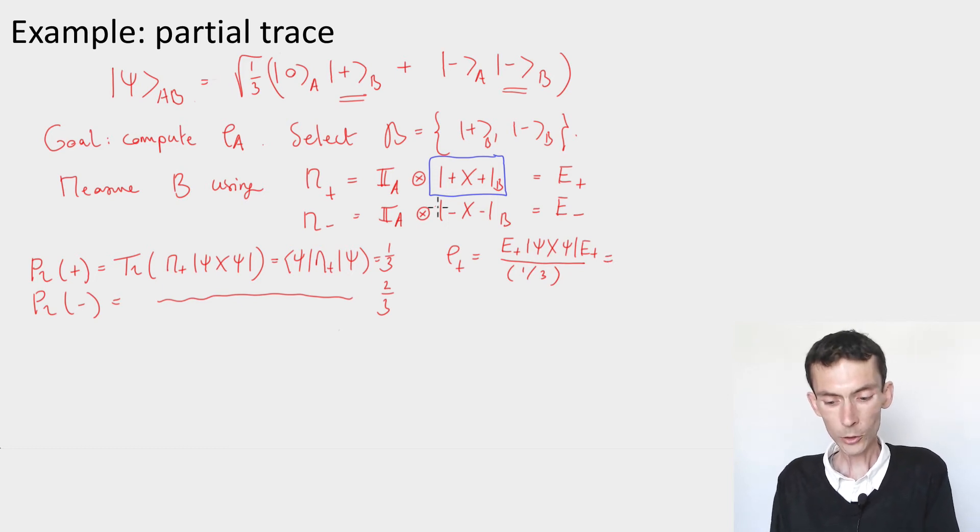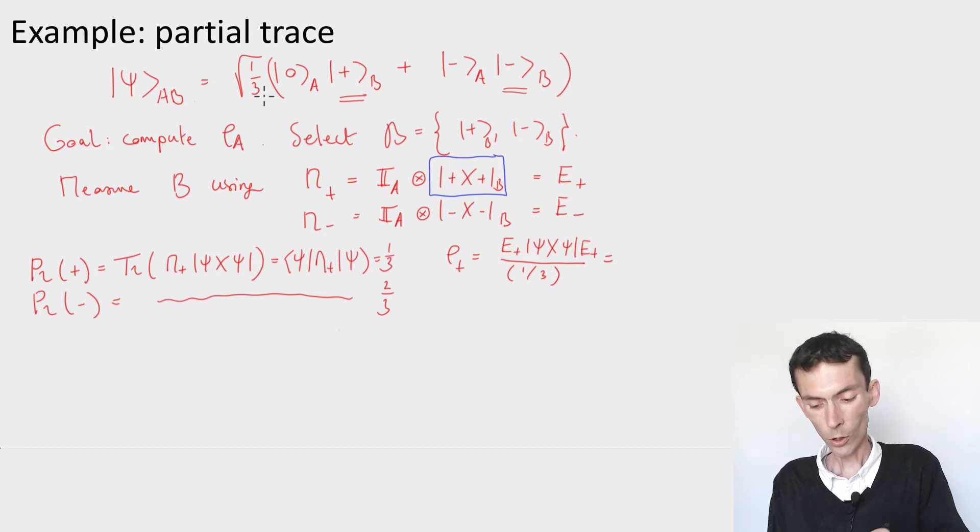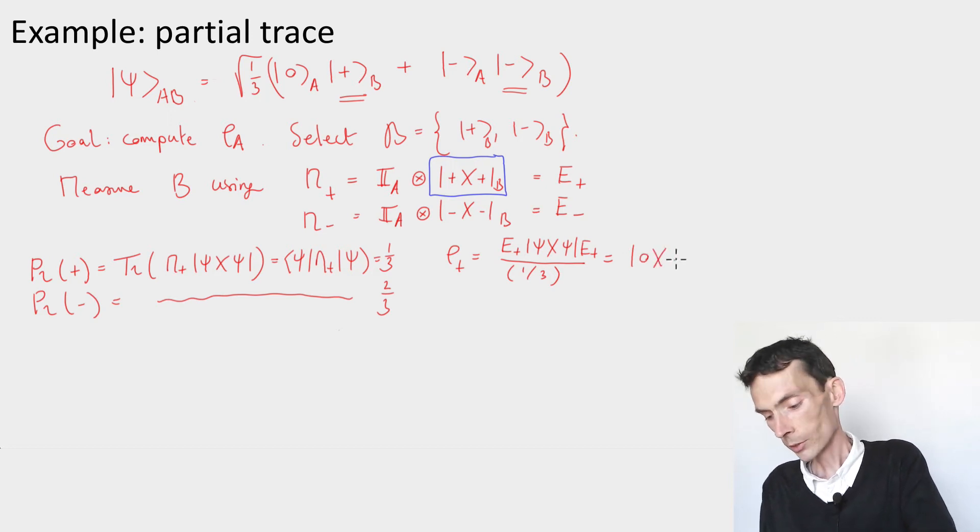And here again, you know what E plus is, it just projects B onto plus. And if B is projected onto plus, A is in the state zero. So what we get with these one-thirds cancel out, and we simply get zero for A, tensored the plus state for B.